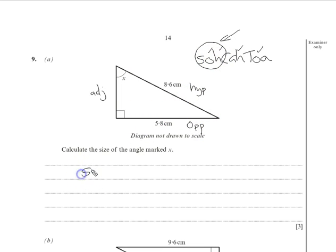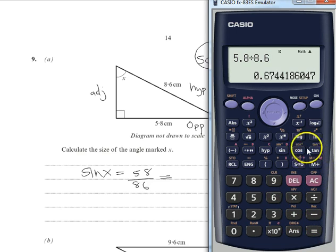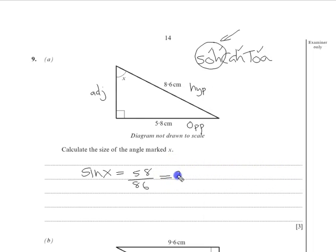So the sine of the angle x is equal to the opposite over hypotenuse. The opposite is 5.8 divided by the hypotenuse 8.6. So tap that in a calculator. We've got 5.8 divided by 8.6. I'm going to go back to the fraction, 29 over 43, because it's more accurate.